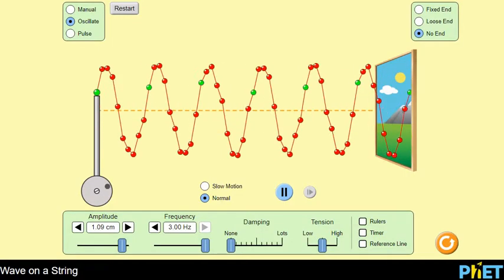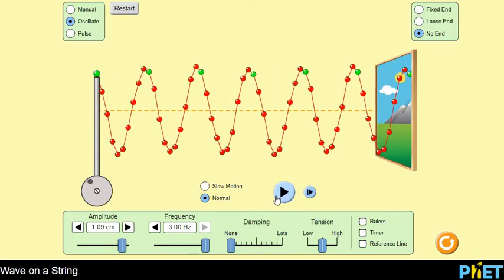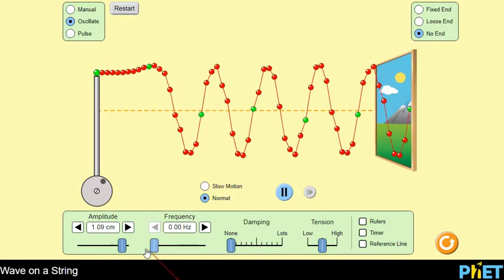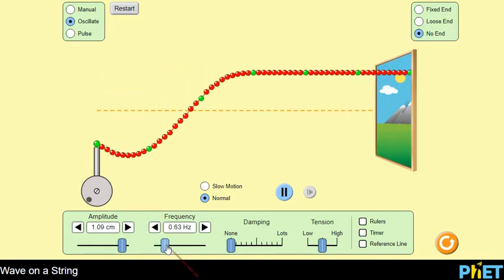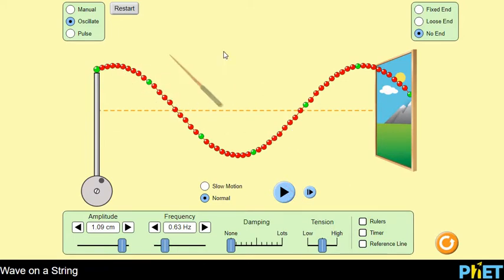So again, we can verify this in our simulation. If we would just freeze this for a minute on our high frequency, we can see very easily that this wavelength here is pretty short. Whereas if we let this go again but turn it to a very low frequency, that's going to be too low, like this, you can see that from here to here is our wavelength, which is a very large wavelength.